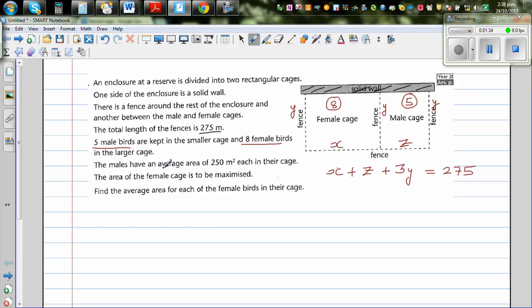The males have an average area of 250 meters squared in their cage. So you can say average area for each male is given to be 250 meters squared. So what does that mean?